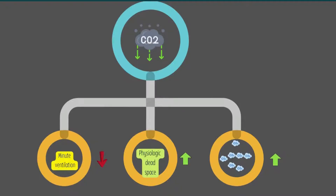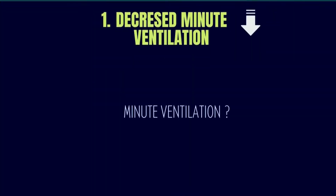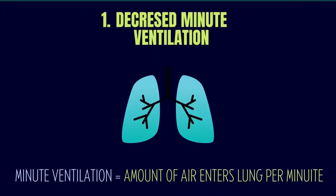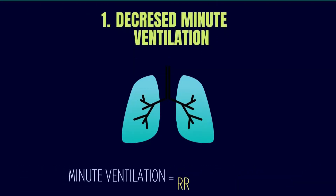Number one: decreased minute ventilation. First, what is minute ventilation? Minute ventilation, also known as total ventilation, is a measurement of the amount of air that enters the lungs per minute. It is the product of respiratory rate and tidal volume — minute ventilation equals respiratory rate times tidal volume.